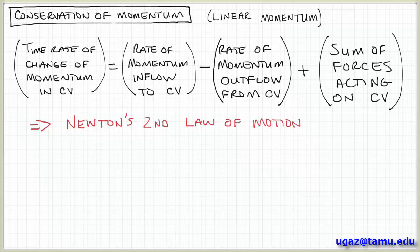Normally we think of momentum as mass times velocity, MV. We normally consider cases in physics where mass remains constant. So it just becomes the time rate of change of momentum equals mass times the time rate of change of velocity, which is MA. So F equals MA is an expression of Newton's second law.